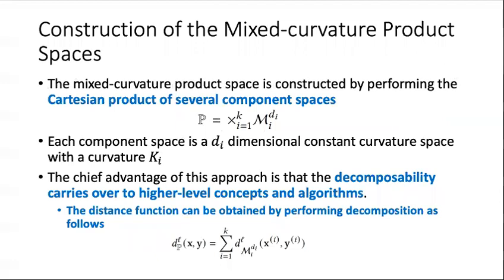After we have the constant curvature translational distance model, we introduce the mixed-curvature translational distance model. We first introduce how we construct the mixed-curvature product space. The mixed-curvature product space is constructed by performing the Cartesian product of separate component spaces. Then each component space is a dimensional constant curvature space with a curvature K. The chief advantage of this approach is that the decomposability carries over to high-level concepts and algorithms. This means the distance function can be obtained by performing the decomposition as follows.